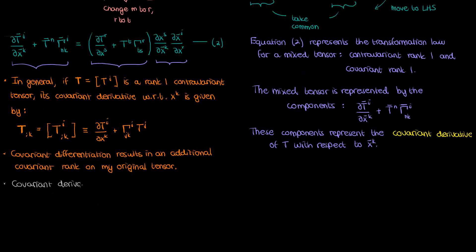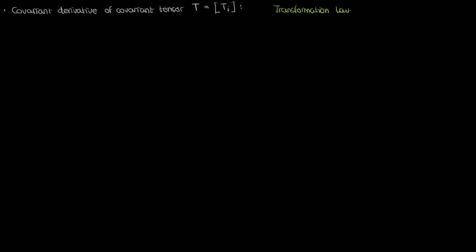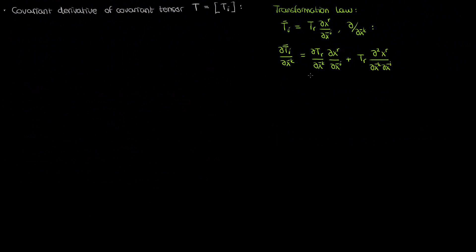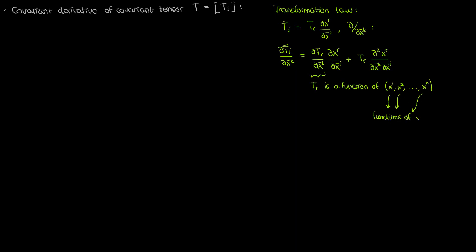Now the formula for the covariant derivative of a covariant tensor is a bit different. To derive this formula, let's start with the tensor transformation law of a covariant tensor. We'll take the simple partial derivative of both sides with respect to x super k bar — I've already used the product rule on the right hand side to split things up. Now I can use the chain rule on the partial of t sub r with respect to x super k bar, by recognizing that t sub r is a function of all the unbarred coordinates x super 1, x super 2, and so on, and that each of these is a function of the barred coordinate x super k bar.